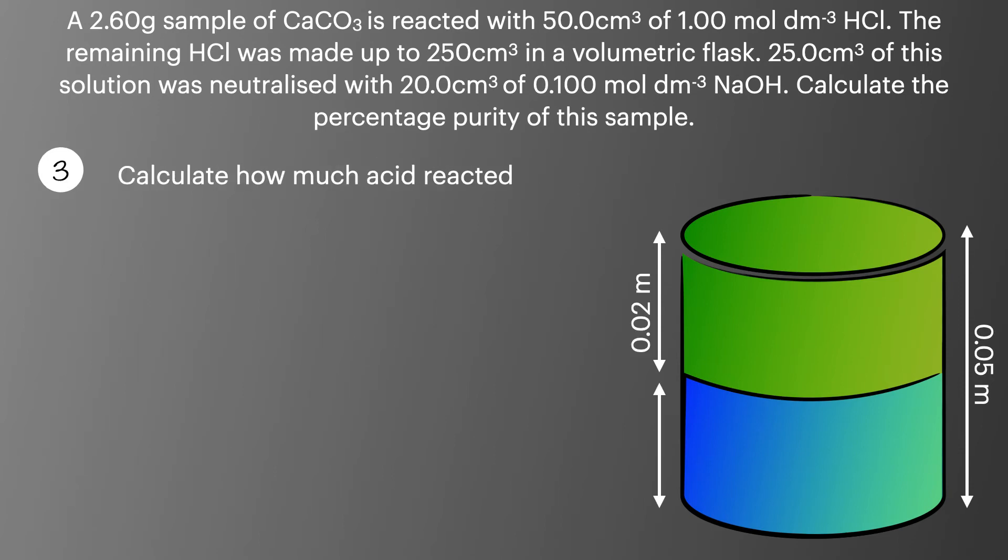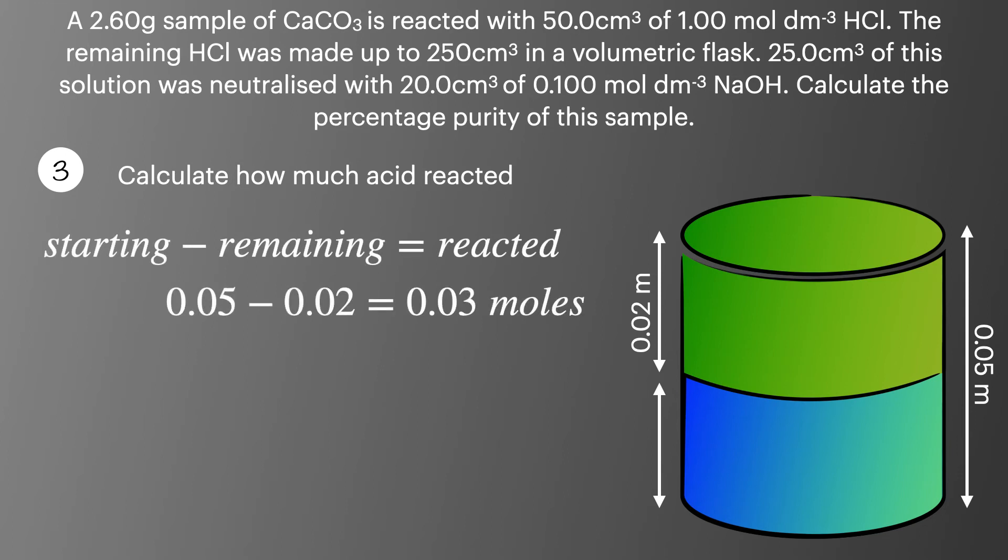In step three we need to calculate the number of moles of HCl that reacted. To do this we take the starting moles and take away the remaining moles to leave us with 0.03 moles.